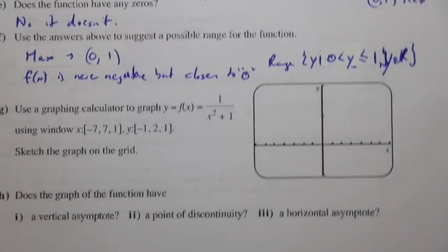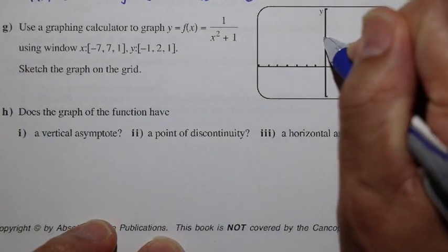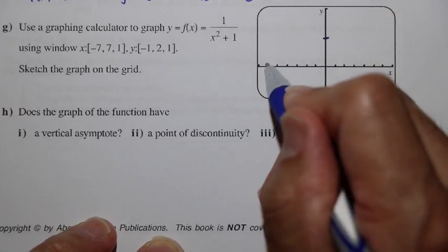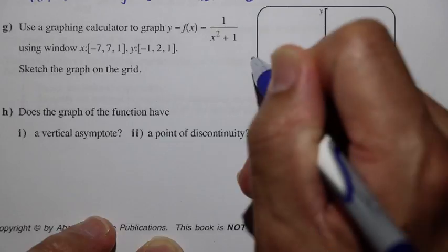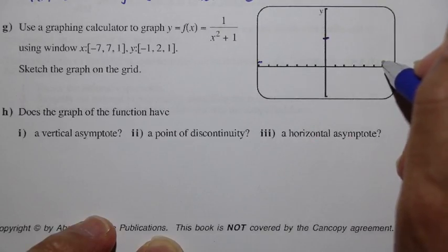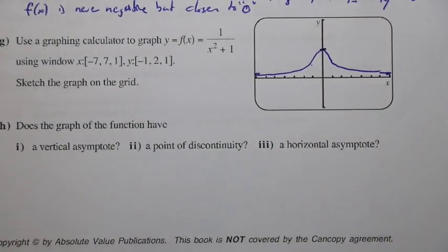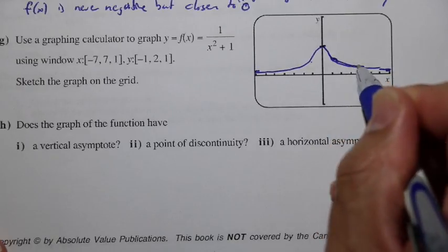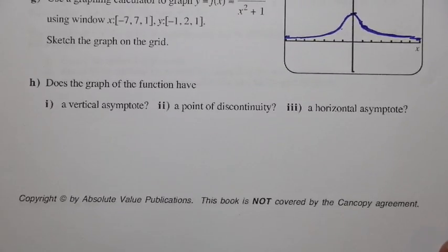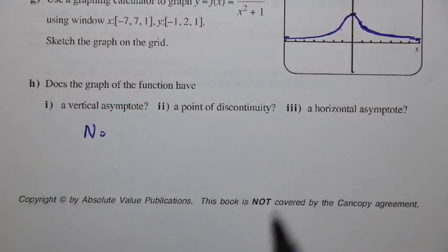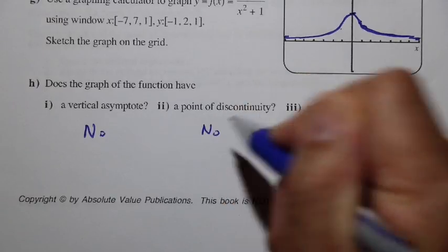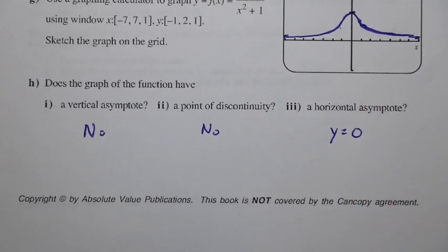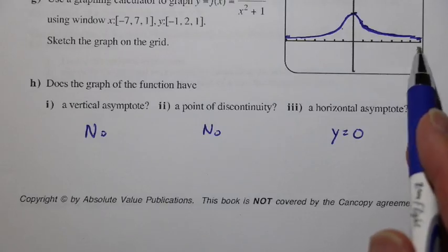Using a graphing calculator, we can see the graph: at x = 0, the maximum is 1. The curve gets closer to zero as x approaches negative infinity and positive infinity, forming a smooth bell-shaped curve drawable without lifting your pen. The graph has no vertical asymptote, no point of discontinuity, but does have a horizontal asymptote: y = 0, the x-axis.